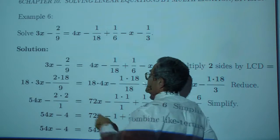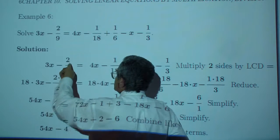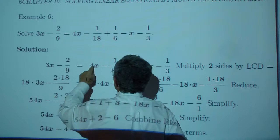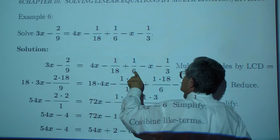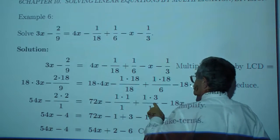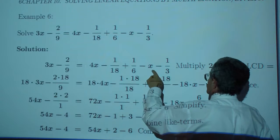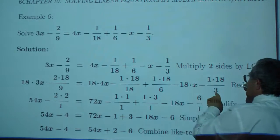18 times 3x, 18 times 2 over 9, 18 times 4x, 18 times 1 over 18, 18 times 1 over 6, and 18x, and 18 times 1 over 3.